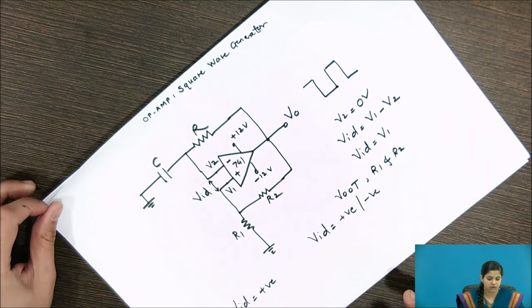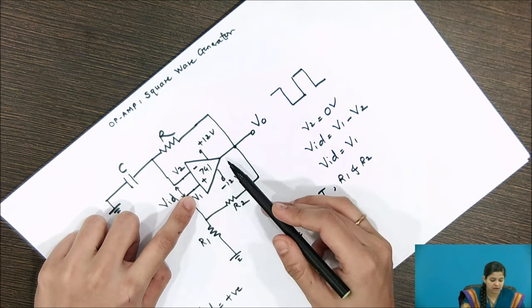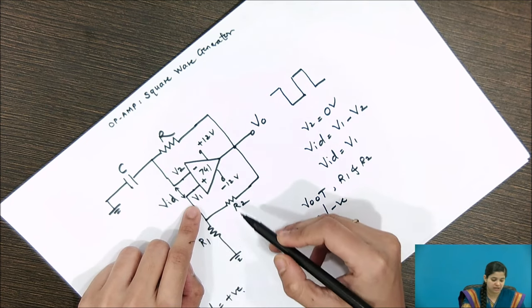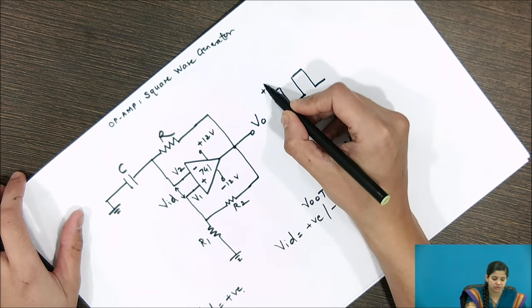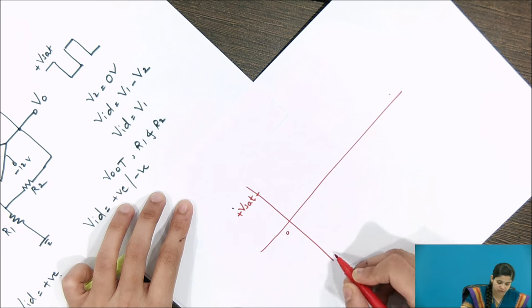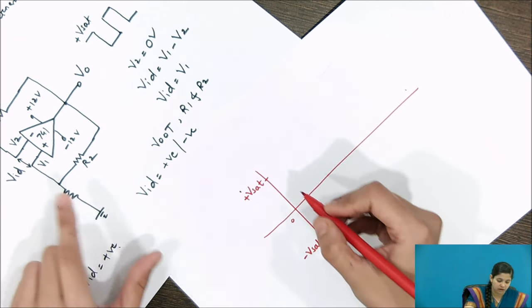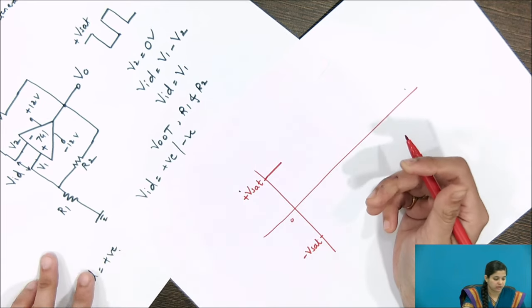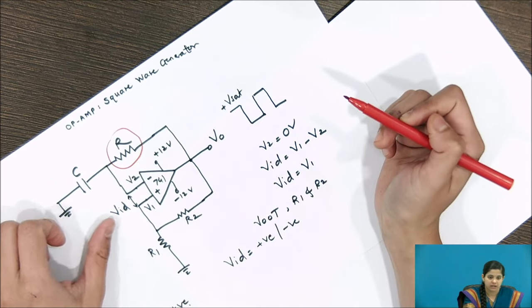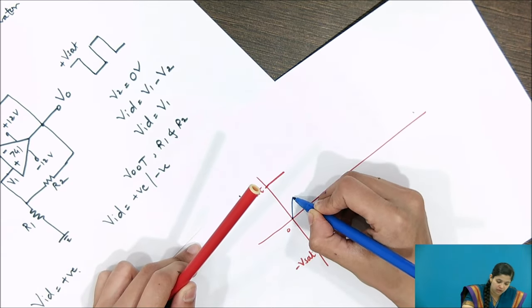Now we will see the corresponding waveforms with the circuit. Since VID is positive, the gain of the op-amp is maximum because C does not have any charge. This positive voltage drives the output of the operational amplifier towards positive saturation voltage. The initial waveform shows the output at positive saturation. At this time, capacitor C starts charging toward the positive saturation voltage through resistor R, increasing V2 from 0 up to a certain value.